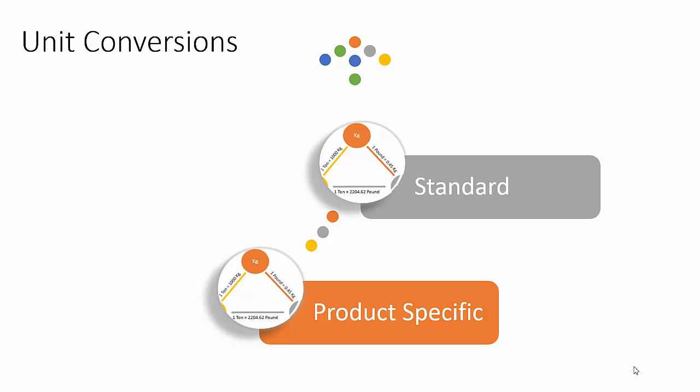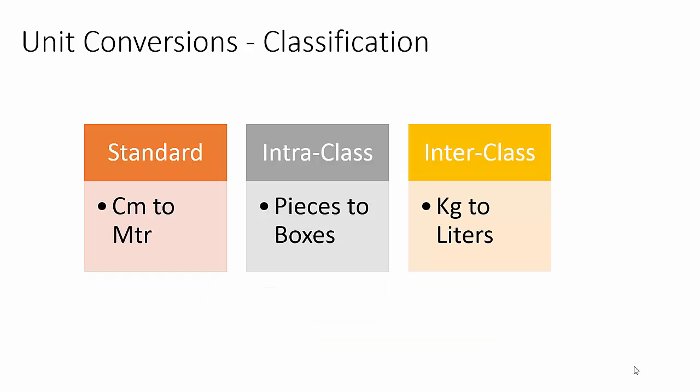If both a product-specific and a standard conversion rule exist for a unit of measure, the product-specific conversion rule is used to convert units of measure for the product. Product specificity is important because, for example, a pack of one type of product might contain five pieces, whereas a pack of another type of product might contain ten pieces. Therefore, a unit pack can be used for different quantities of pieces depending on the product.